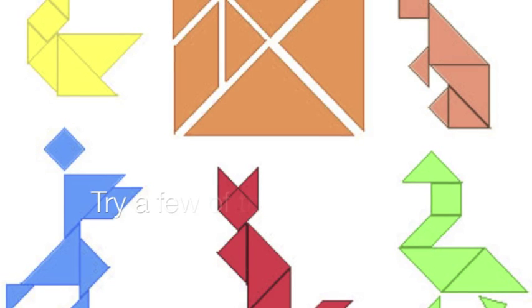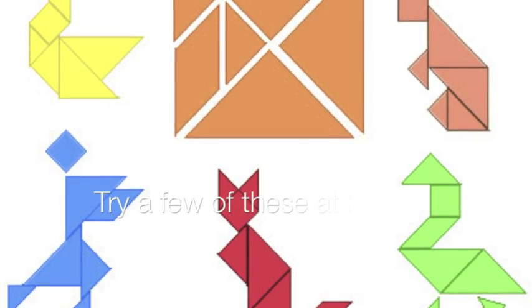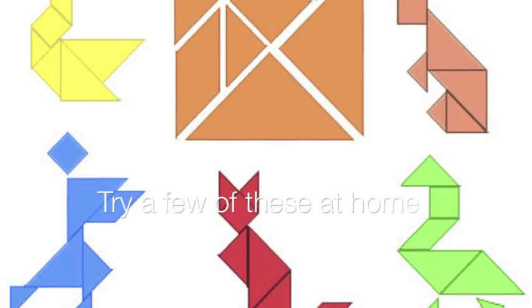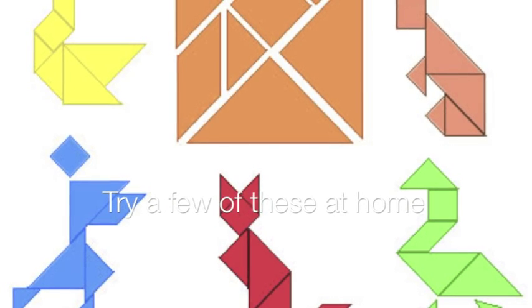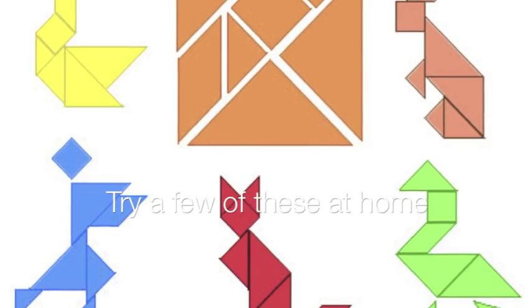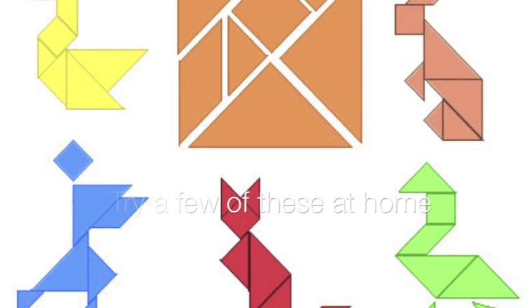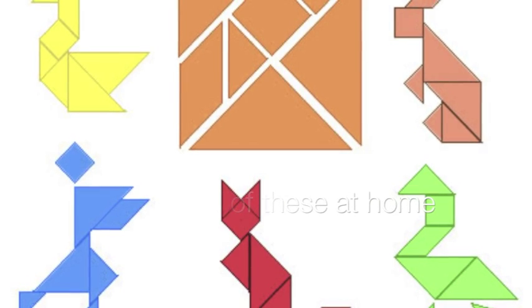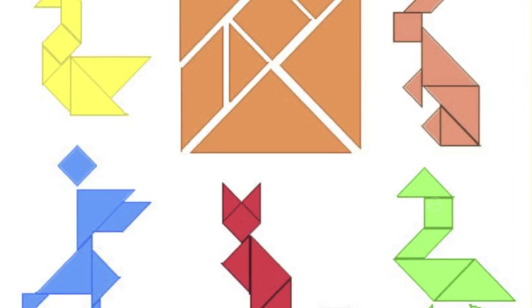You're given a square made up of seven geometric shapes: two large triangles, one medium triangle, two small right triangles, a square, and a parallelogram. And you can manipulate and move these shapes in space to help form different things.